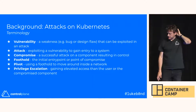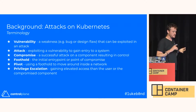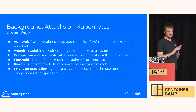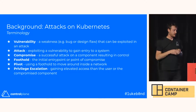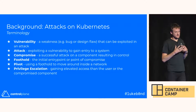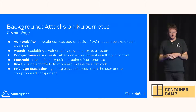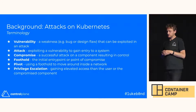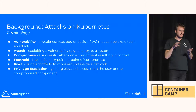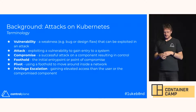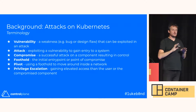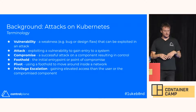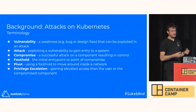Some terminology: a vulnerability is a weakness — a design flaw or a bug — that can be exploited in an attack. An attack is when someone tries to break into a system by exploiting a vulnerability. Compromise is when a component is attacked and an attacker gains control of it. A foothold is the first entry point where an attacker breaks into a cluster, from which they'll pivot to other places. Privilege escalation is going from one level of privileges to having more — something an attacker will want to do once they break in.